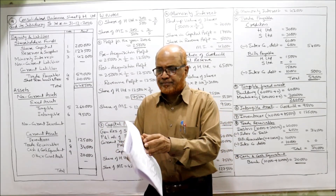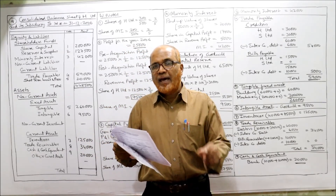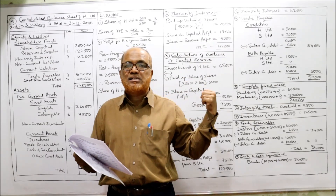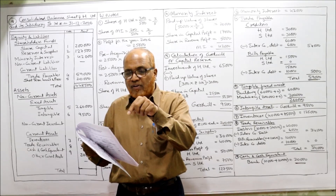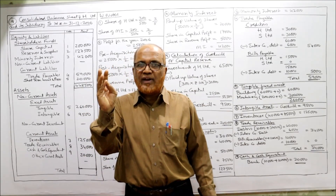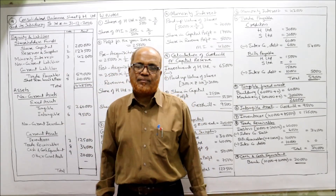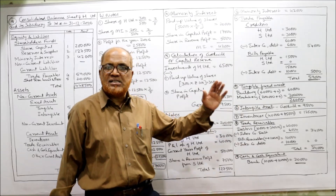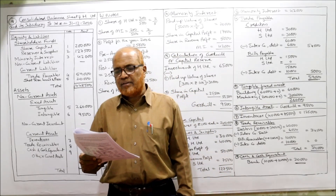Profit and loss account: H Limited 40,000; S Limited 20,000. H Limited's P&L account comes as-is in the consolidated balance sheet, whereas S Limited's P&L account is considered in working notes. Profit for current year 2006 is separately given. In the consolidated balance sheet, we take reserves, P&L account, and current year profit of H Limited as-is, with no change. For S Limited, all these items are considered in working notes regarding how much is capital profit and how much is revenue profit. Bank overdraft and bills payable are liabilities that come directly into the consolidated balance sheet.